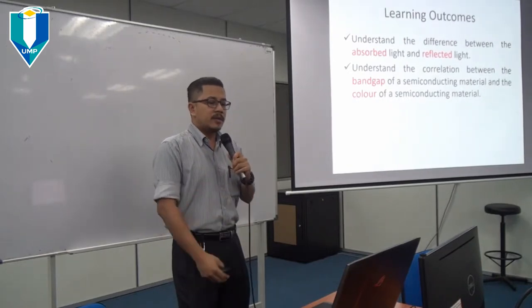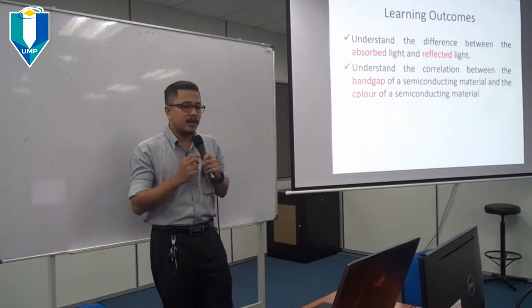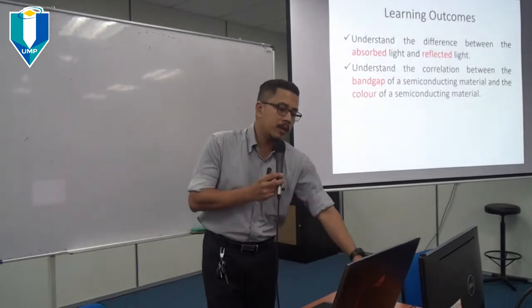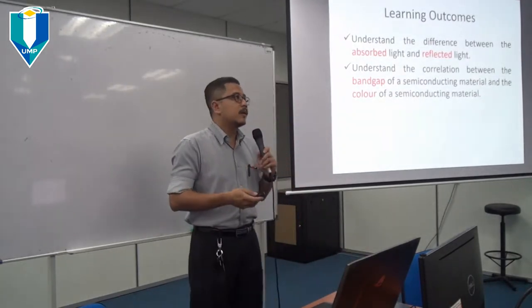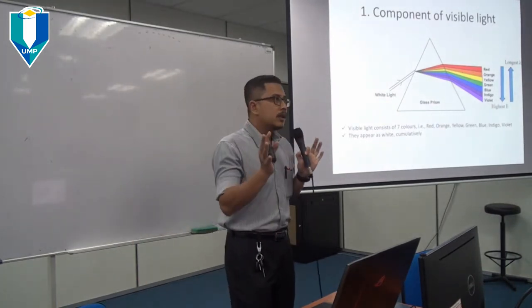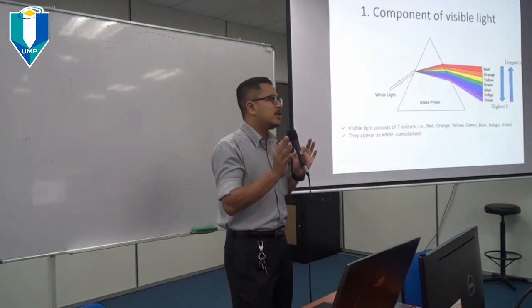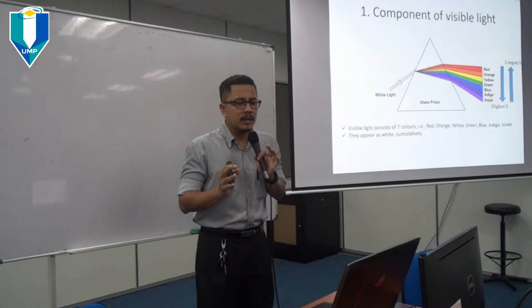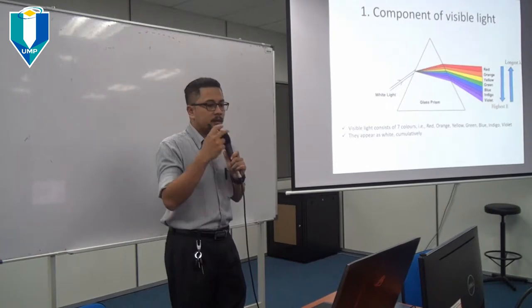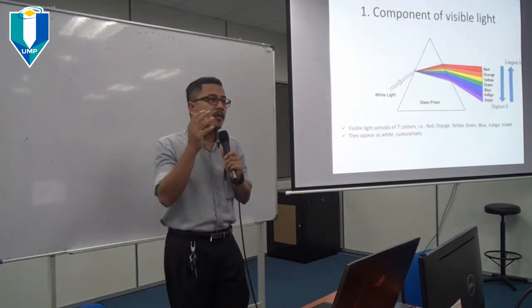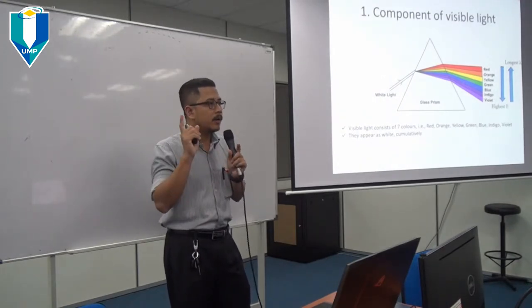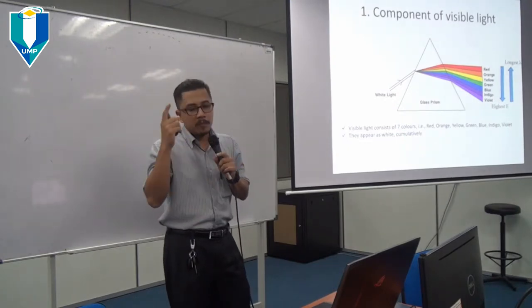The second learning outcome is to understand the correlation between the band gap of semi-conducting material and the colour of a semi-conducting material. The band gap can determine the colour. We know that visible light appears white, and that white light consists of all visible light: red, orange, yellow, green, blue, indigo, and violet. Remember we are talking about light, not pigment, not dye, not paint.